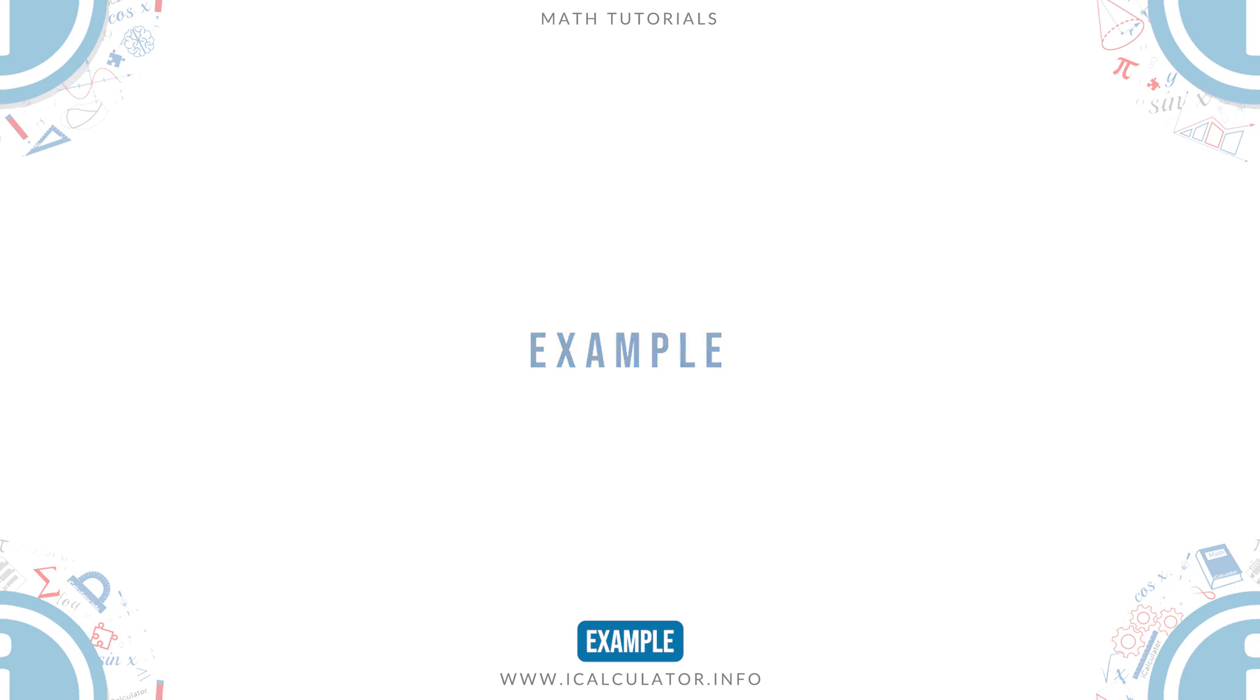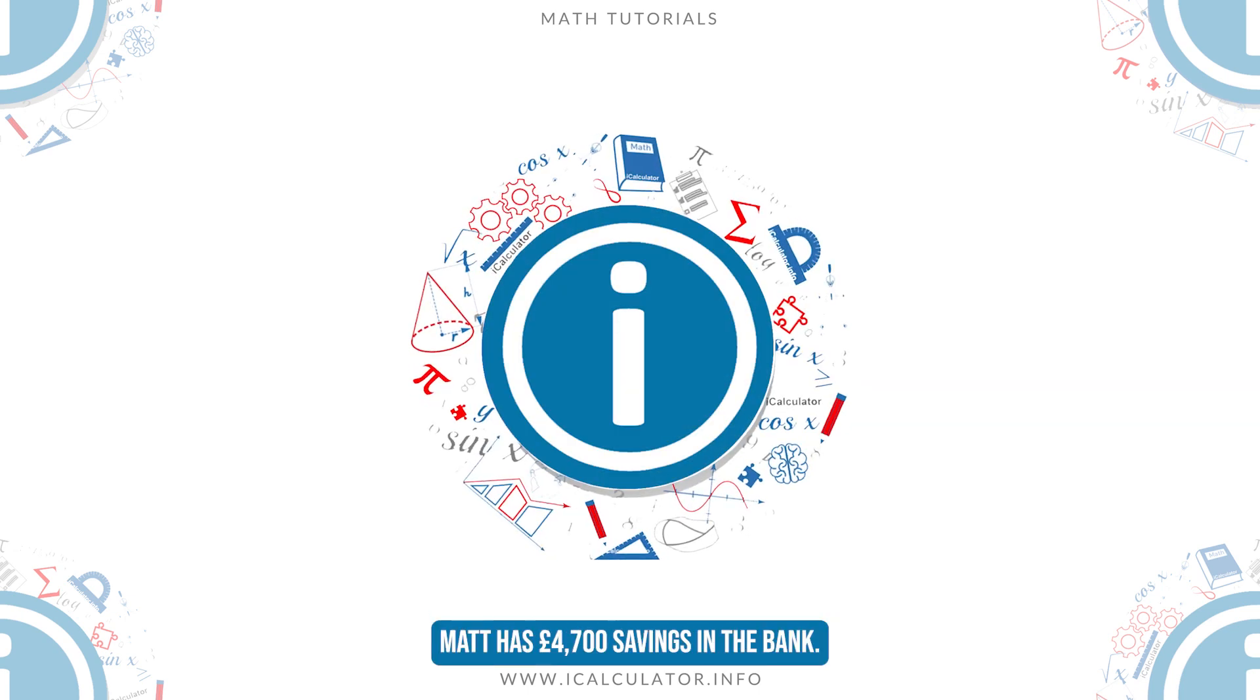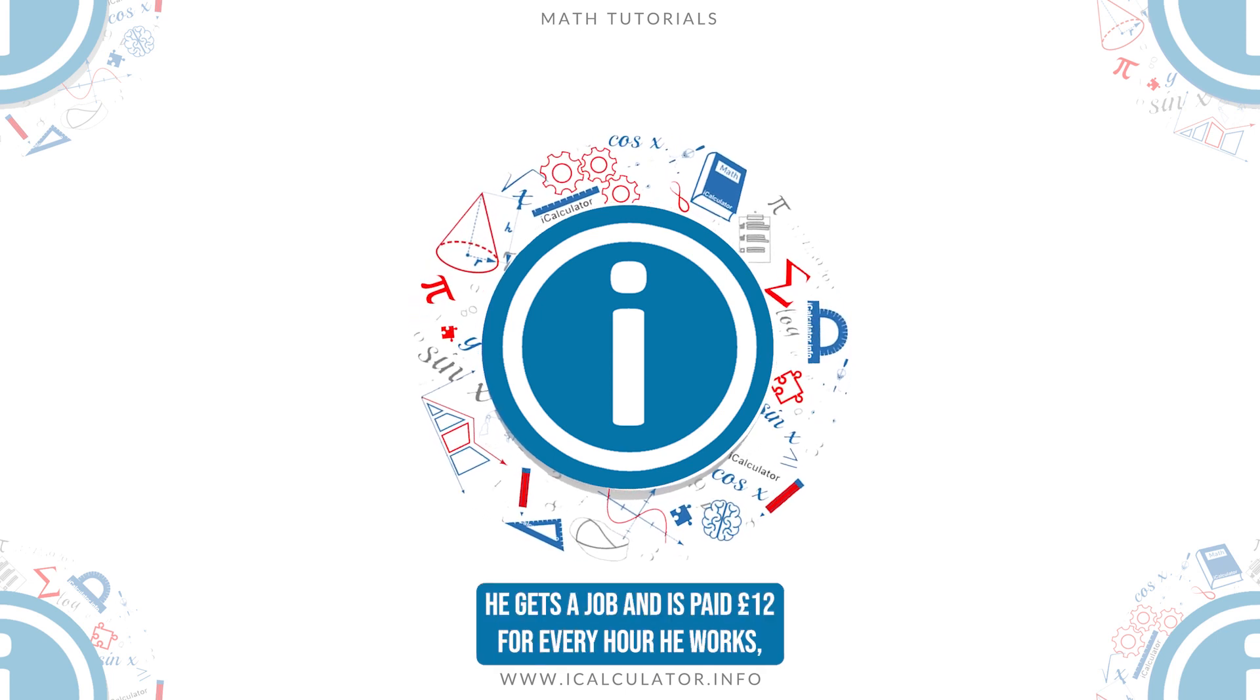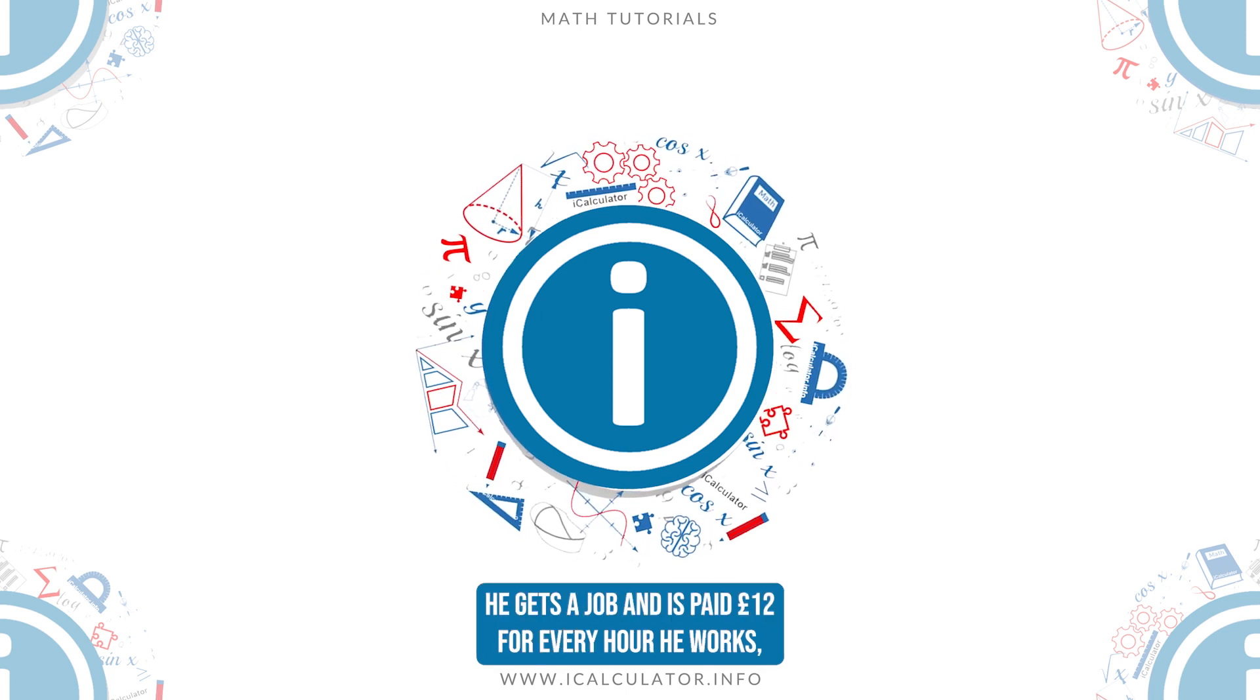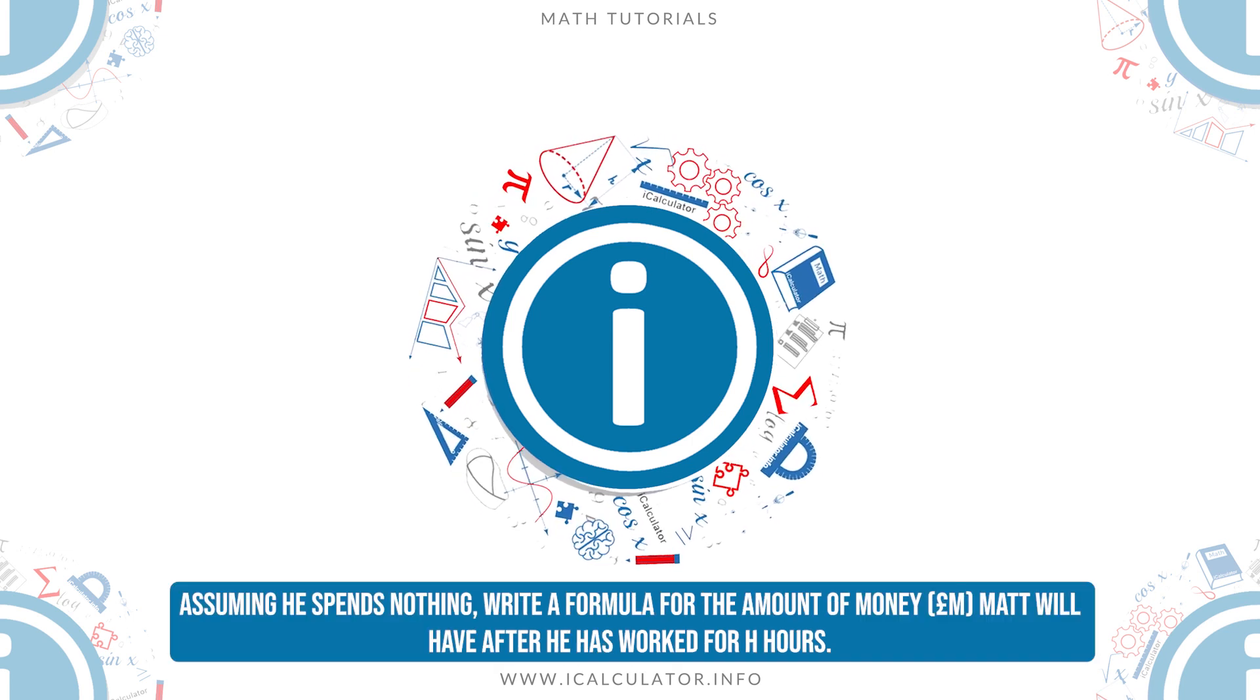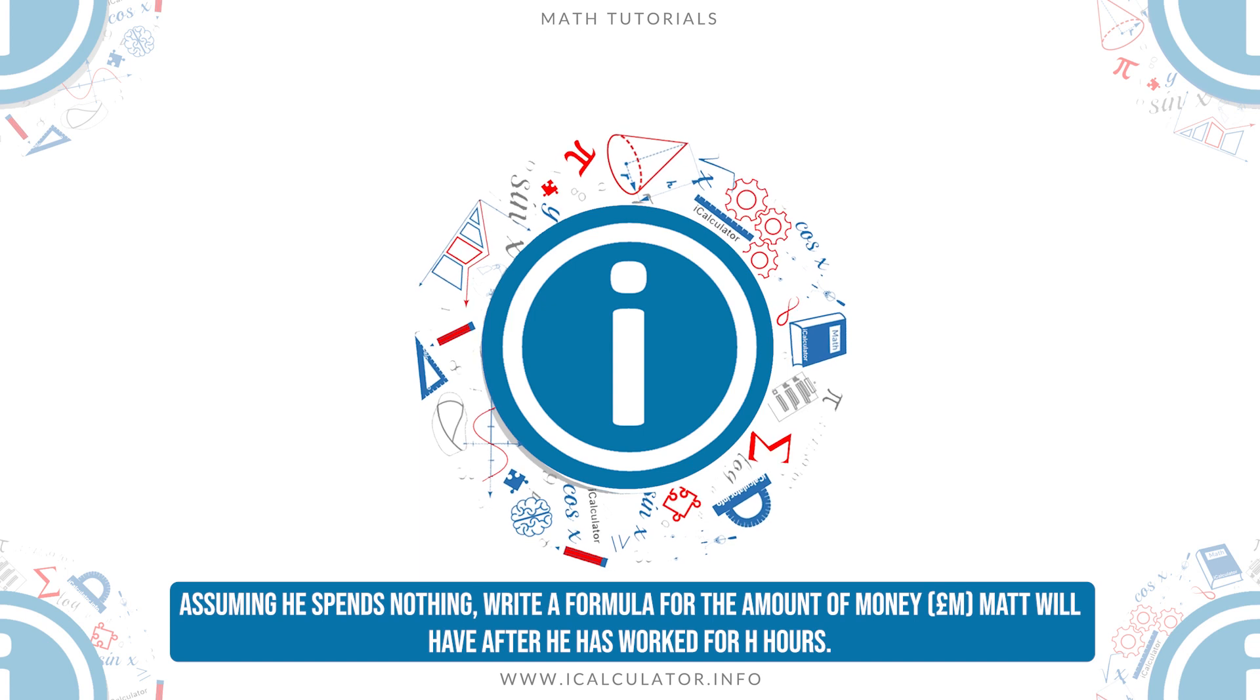Example: Matt has £4,700 savings in the bank. He gets a job and is paid £12 for every hour he works. Assuming he spends nothing, write a formula for the amount of money Matt will have after he has worked h hours.